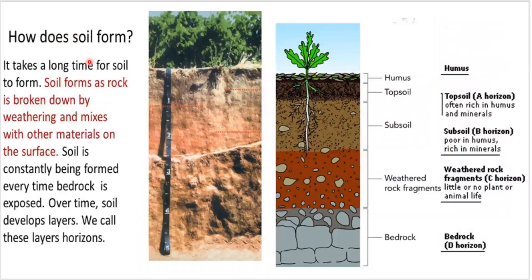How does soil form? It takes a long time for soil to form. Soil forms as rock is broken down by weathering and mixes with other materials on the surface. Soil is constantly being formed every time bedrock is exposed. Over time, soil develops layers. We call these layers horizons, which we saw in the previous slide.